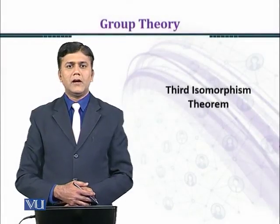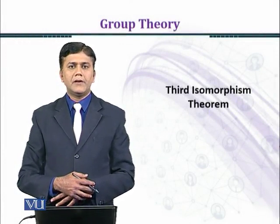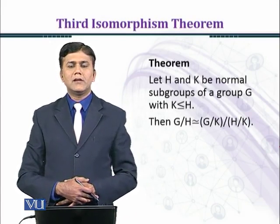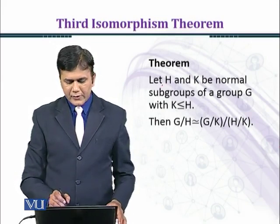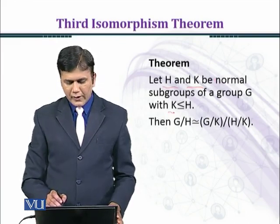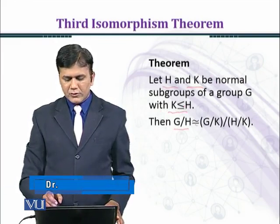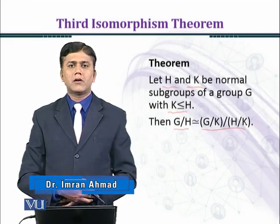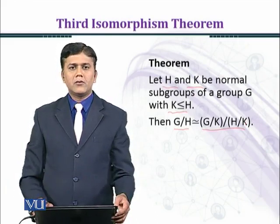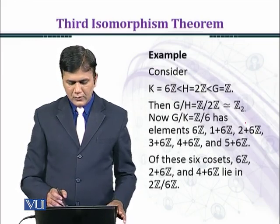In this module we shall apply the Third Isomorphism Theorem in an example. Let's first recall the theorem: let H and K be normal subgroups of G with K a subgroup of H, then G over H is isomorphic to G over K, over H over K.